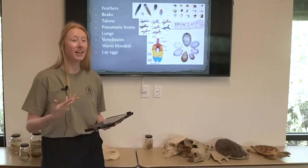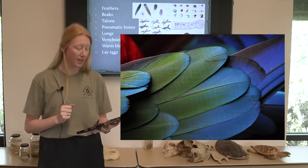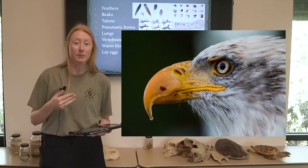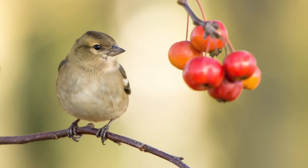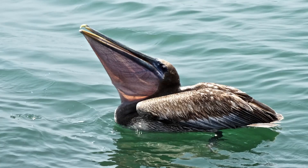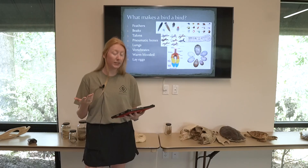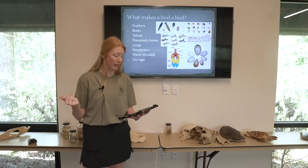So what makes a bird a bird? First, they have feathers — obviously all birds are going to have feathers even if they don't fly. Next, they will have beaks, and these beaks come in all shapes and sizes depending on what they need. Finches are going to have short and stout beaks to bite into things like nuts and acorns, and then you'll have beaks like pelicans that are used for scooping things out of the water. It really depends on what their main food source is.